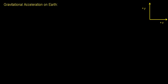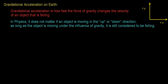In a previous video, we said that acceleration was how fast the velocity of an object changes. In this video, we're going to talk about gravitational acceleration, which is how fast the force of gravity changes the velocity of an object that is falling. In physics, it doesn't matter if an object is moving in the up or down direction — as long as an object is moving under the influence of gravity, it is still considered to be falling.